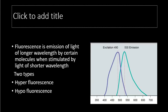Fluorescence is the emission of light of longer wavelength by certain molecules when these molecules are stimulated by light of shorter wavelength. These molecules are excited by blue light which has a wavelength of 490 nm, and the emitted light is yellow-green which has a wavelength of 530 nm. There are two types of fluorescence: hyperfluorescence and hypofluorescence.